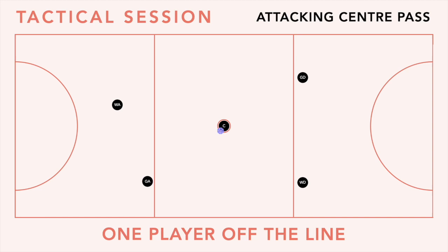Attack and centre pass number two is one player off the line. You can see from the setup here that we've got one player, the wing attack, off the line and we've got the goal attack on the line. You can change around who's on and off the line — it doesn't really matter. But in this circumstance defenders aren't going to get the first phase ball; instead it's the player that's off the line, so in this case the wing attack, that's going to get the first phase.